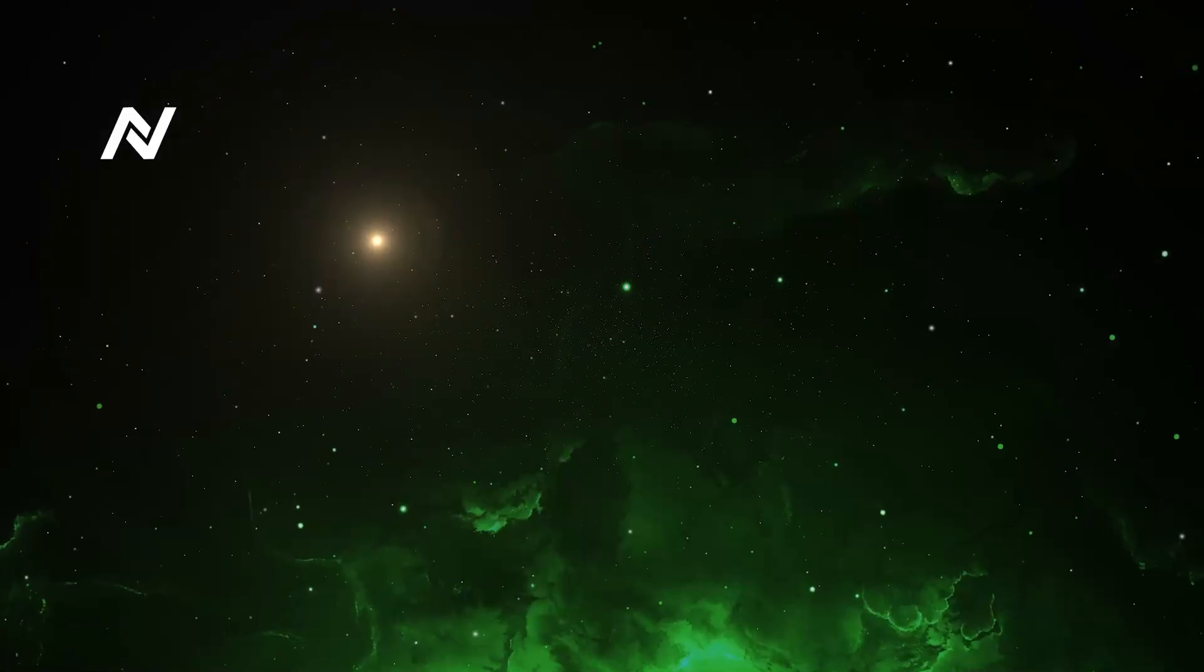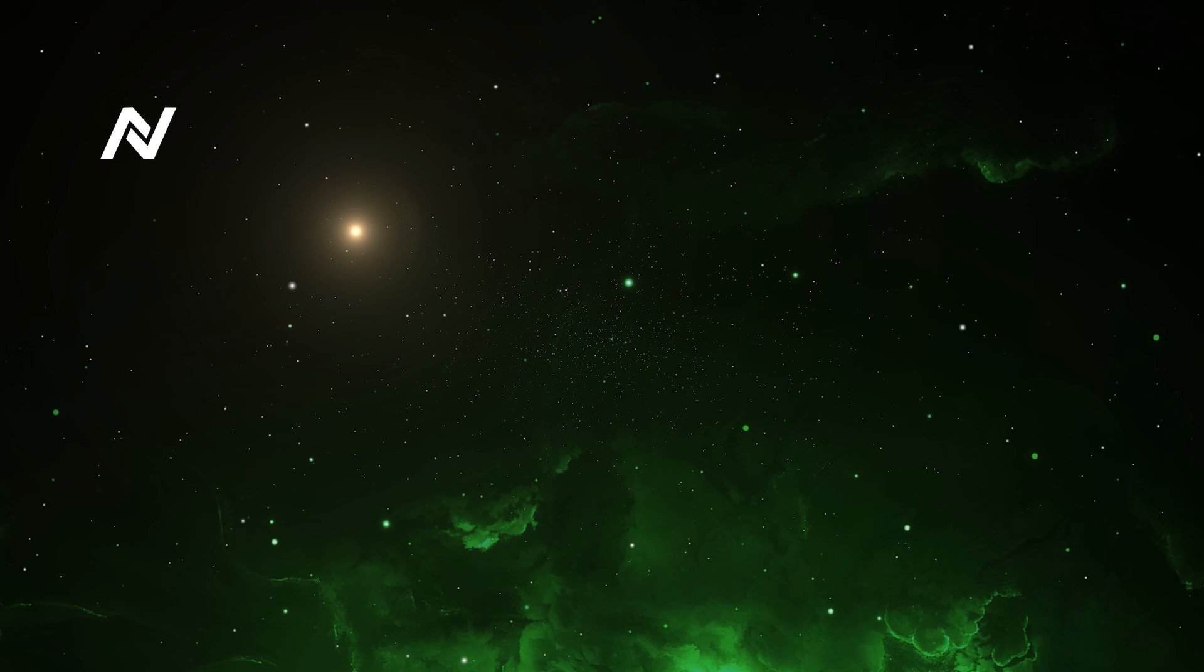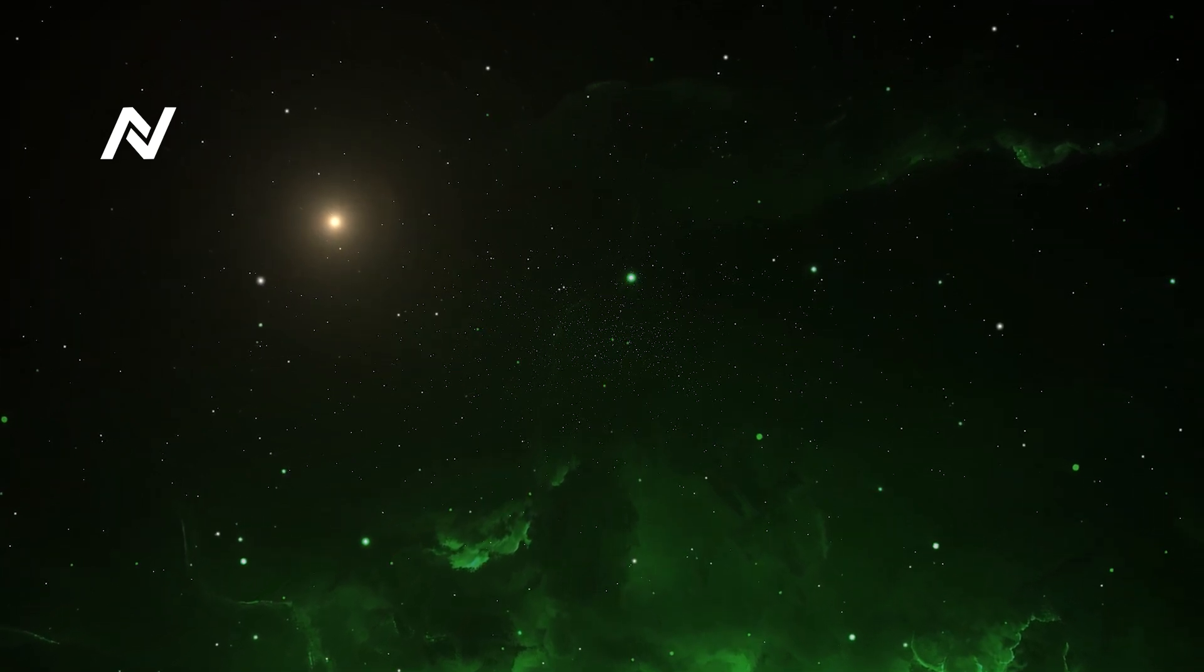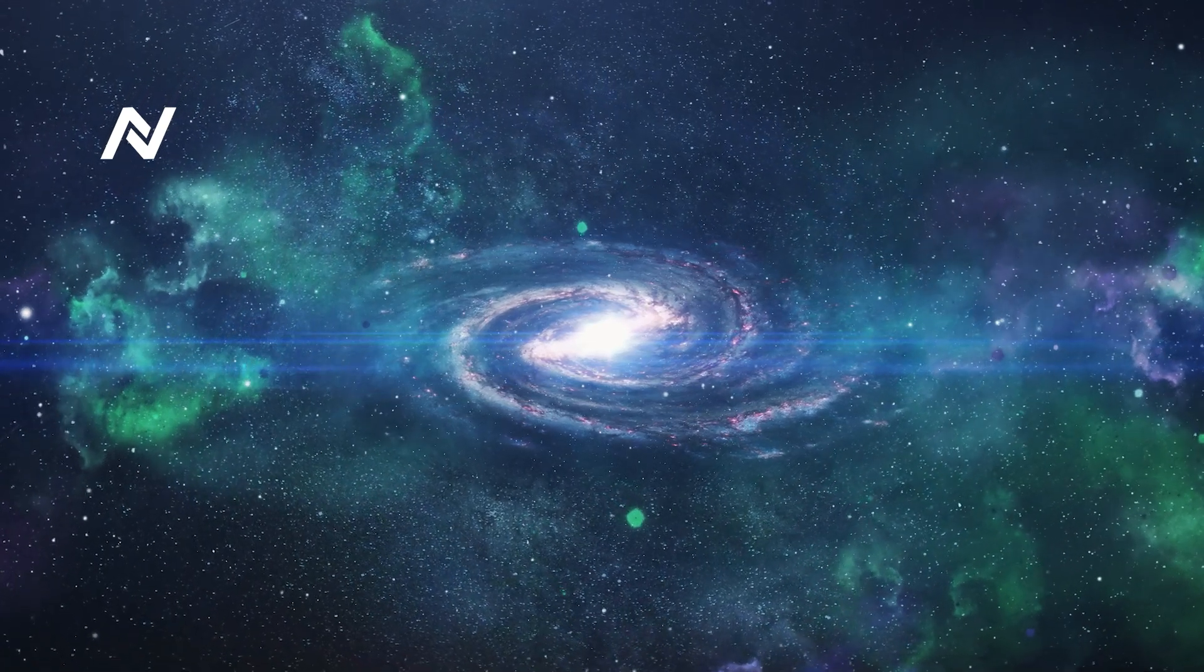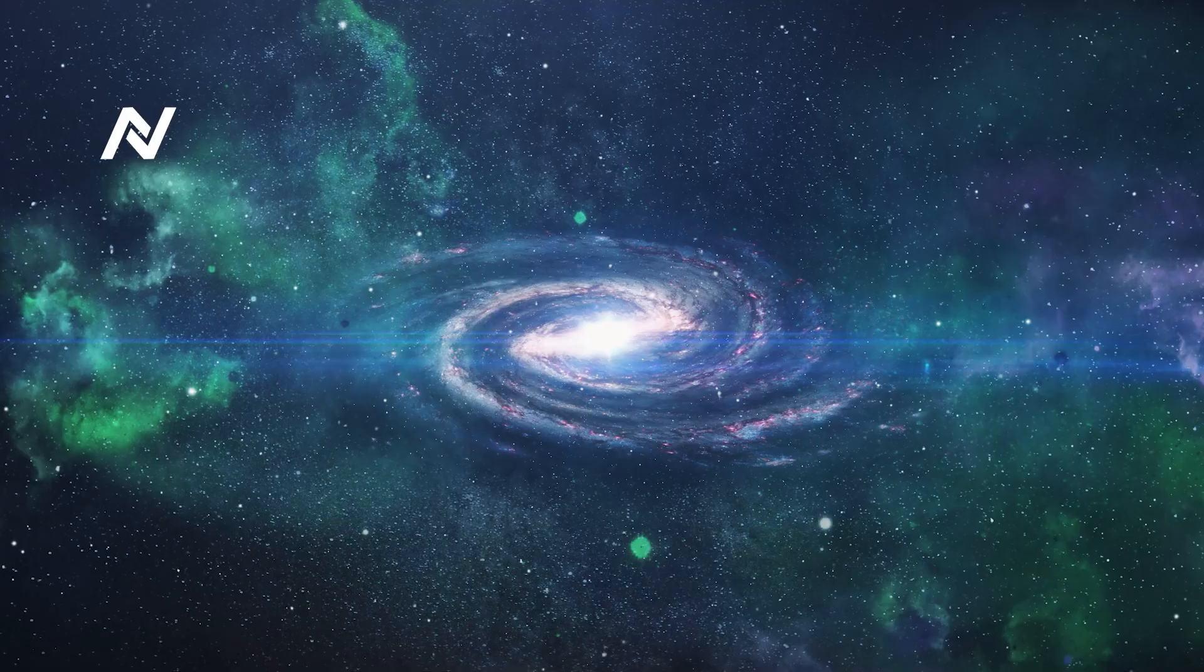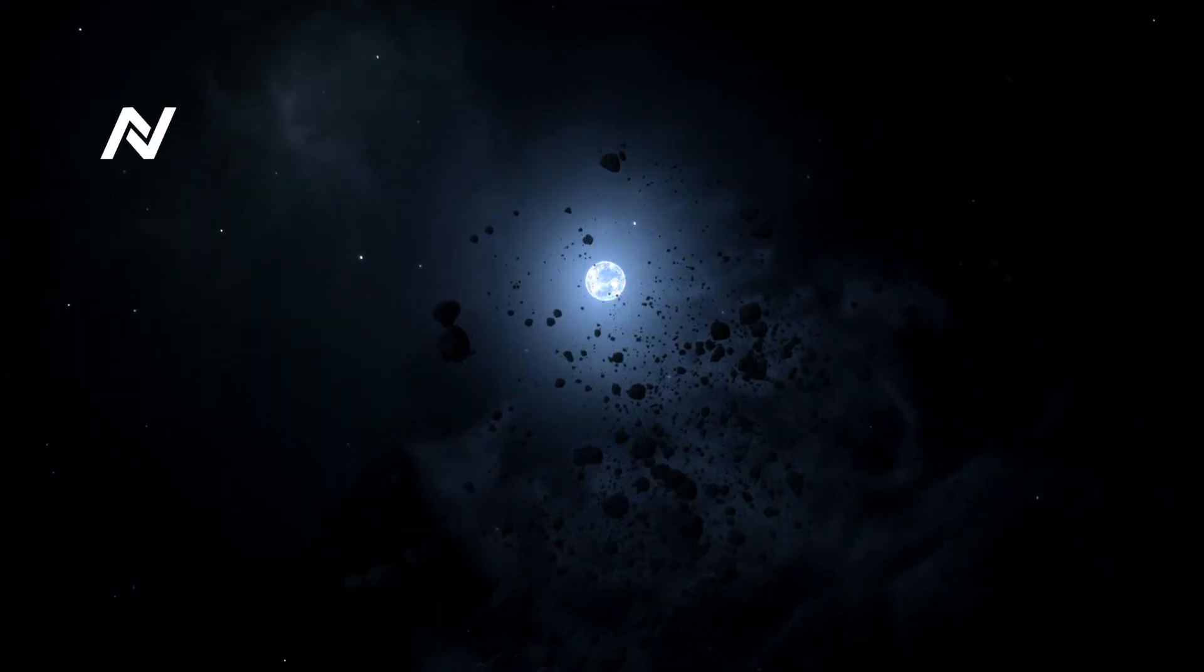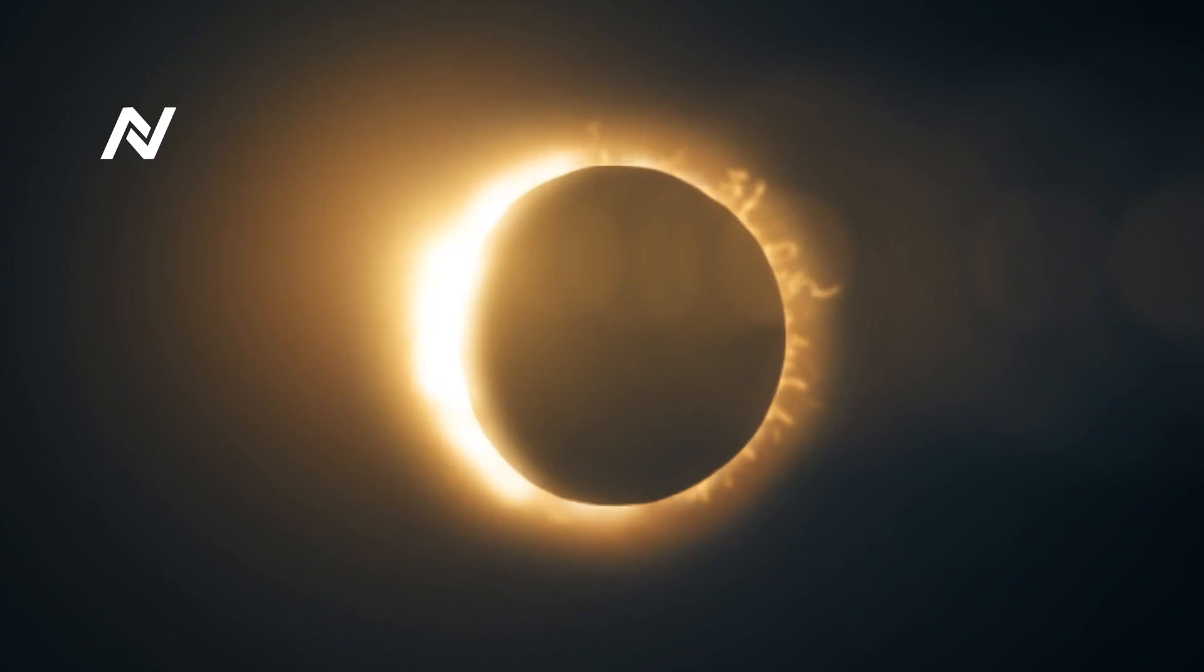Now imagine being able to watch this happen. As you approach a black hole, you might see time stretch out before you, every second lasting longer and longer. The black hole's gravity would distort both space and time, creating a visual whirlpool that pulls everything into its core. From a distance, the black hole might appear to freeze time entirely at its event horizon, the point beyond which nothing, not even light, can escape.